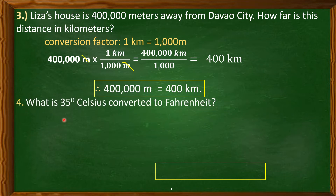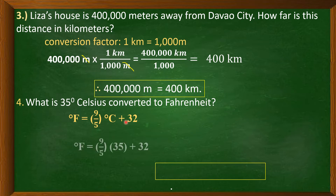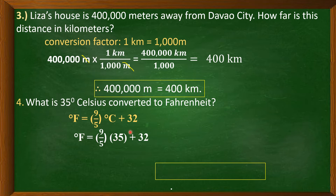Example 4: What is 35 degrees Celsius converted to Fahrenheit? The formula we use is: degrees Fahrenheit equals 9 over 5 times degrees Celsius plus 32. We substitute: copy 9 over 5, the value for degrees Celsius is 35, then bring down plus 32.